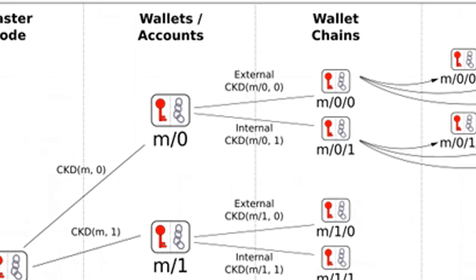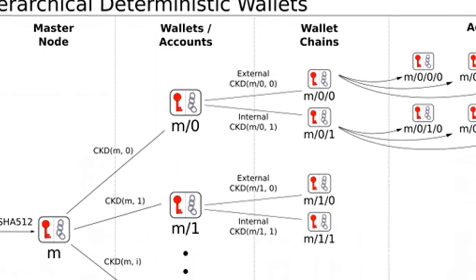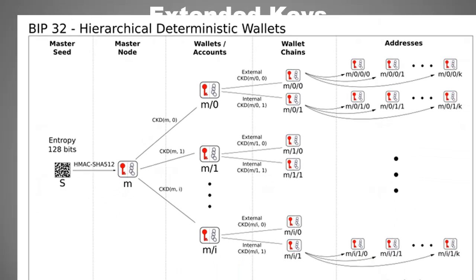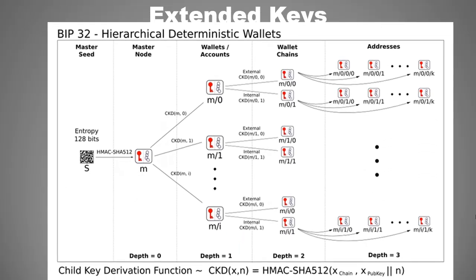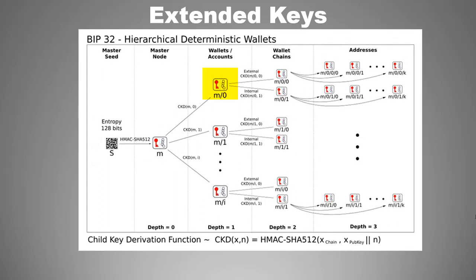In this diagram, all these key-chain pairs that you are seeing are extended keys. They are called extended keys because they are extended or derived from parent keys. You can also call it an extensible key because you extend these keys to get child keys.